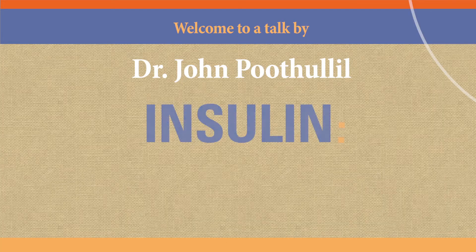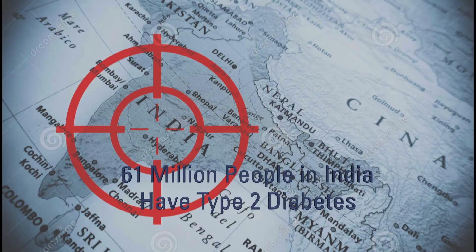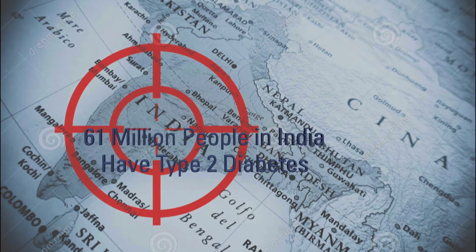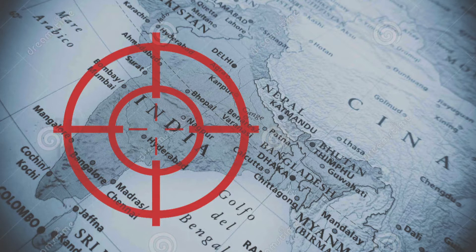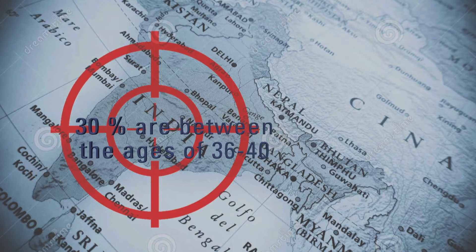My name is John Puthalil. I thank you all for coming and I thank the organizers for arranging this. The topic is type 2 diabetes, more specifically the role of insulin in type 2 diabetes. In India right now we have 61 million people with type 2 diabetes. 30% of the newly diagnosed type 2 diabetics are between the ages 36 and 40, and this is not unusual because everywhere in the world the same thing is happening — the incidence of type 2 diabetes is increasing and the person affected is getting younger and younger.